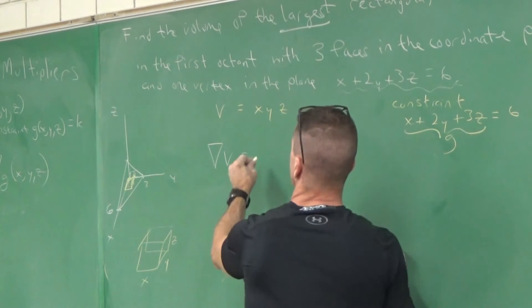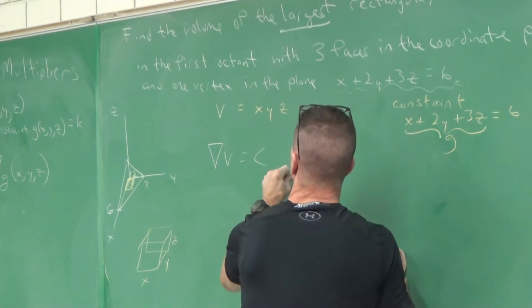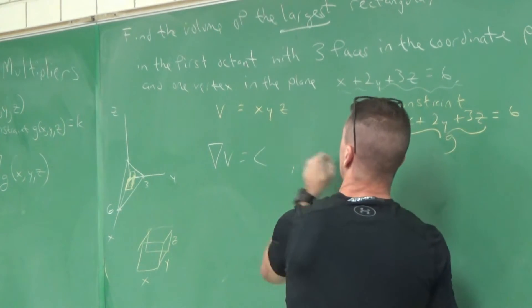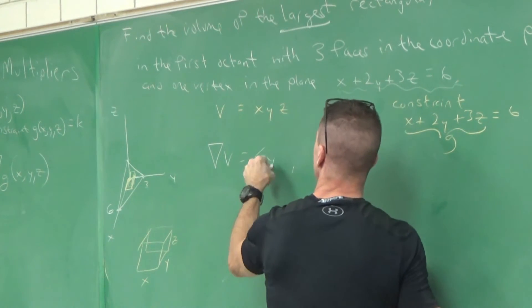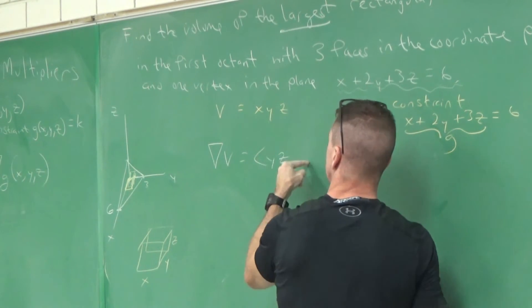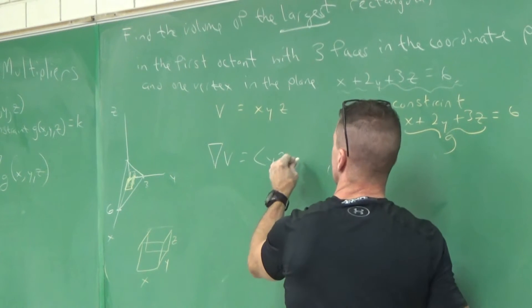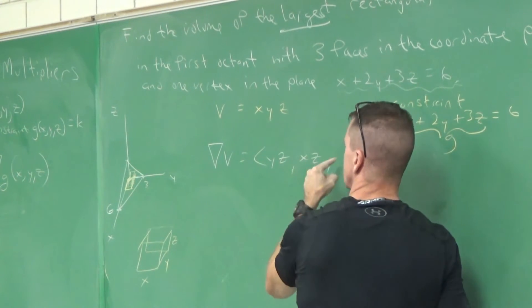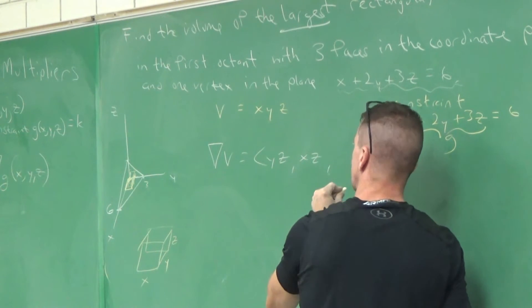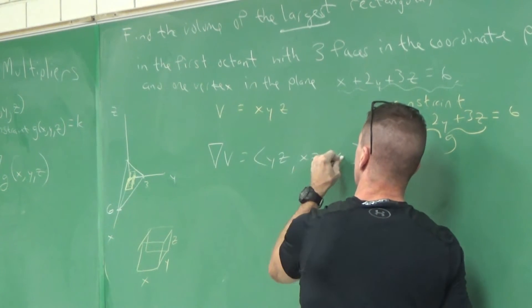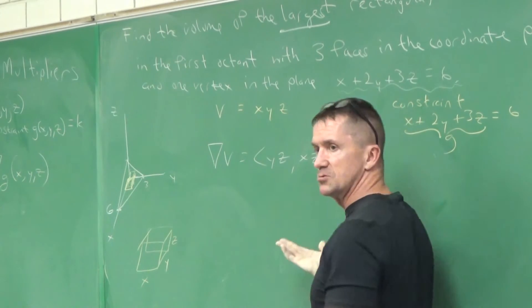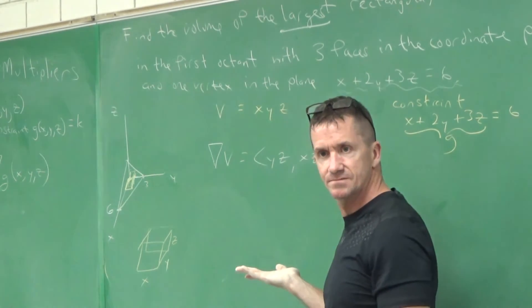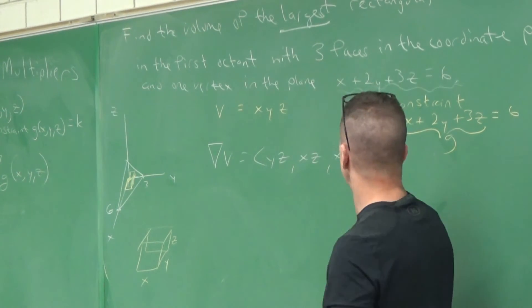What's the partial with respect to X? YZ. What's the partial with respect to Y? XZ. What's the partial with respect to Z? Does that make it a partial reference? Okay, that's done.